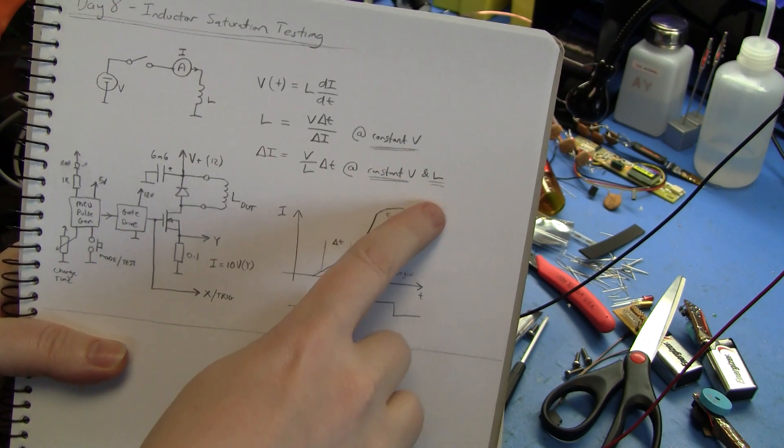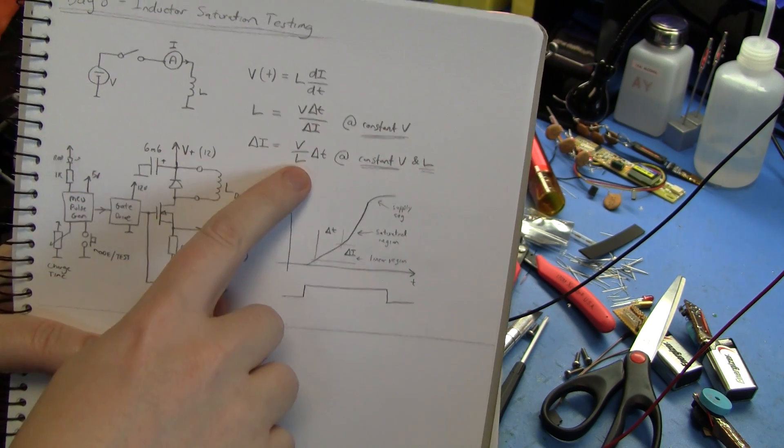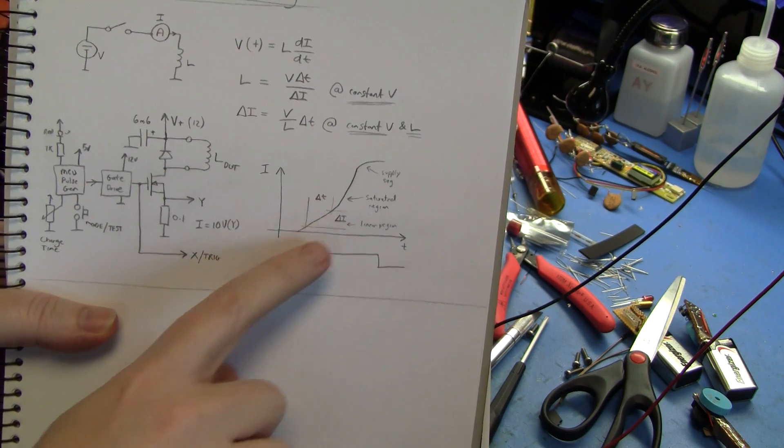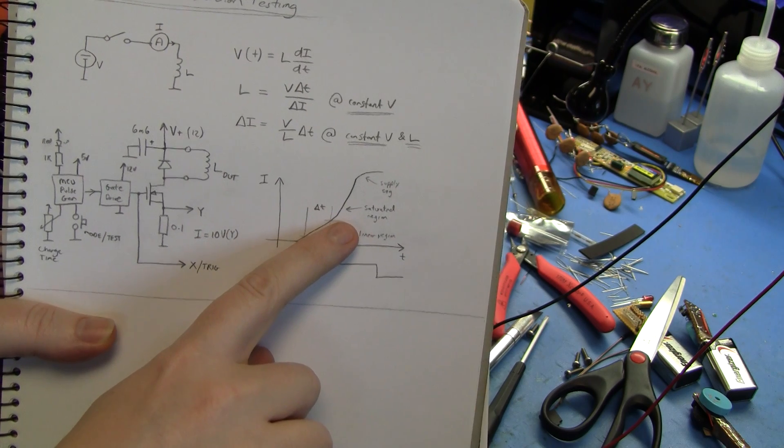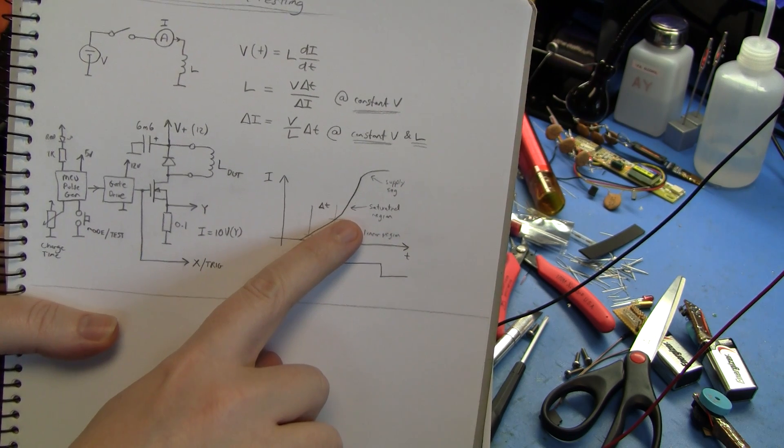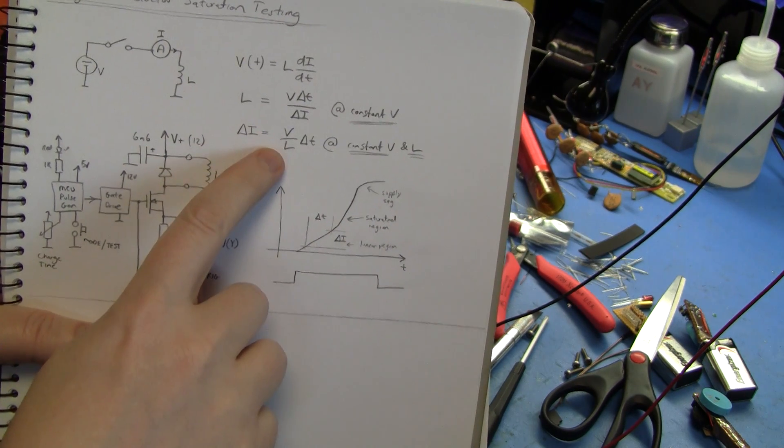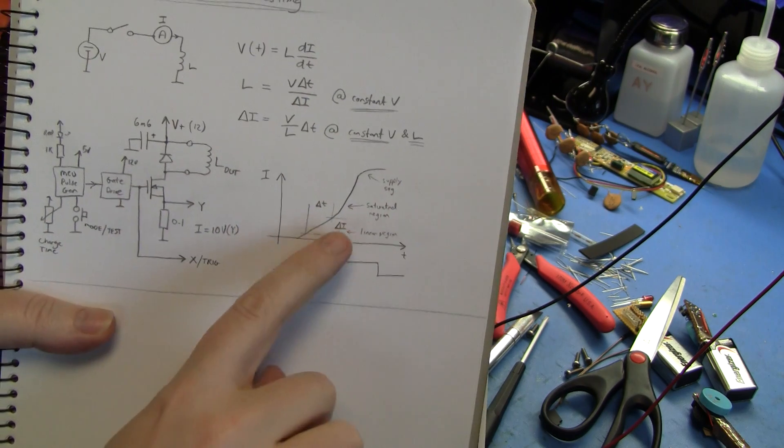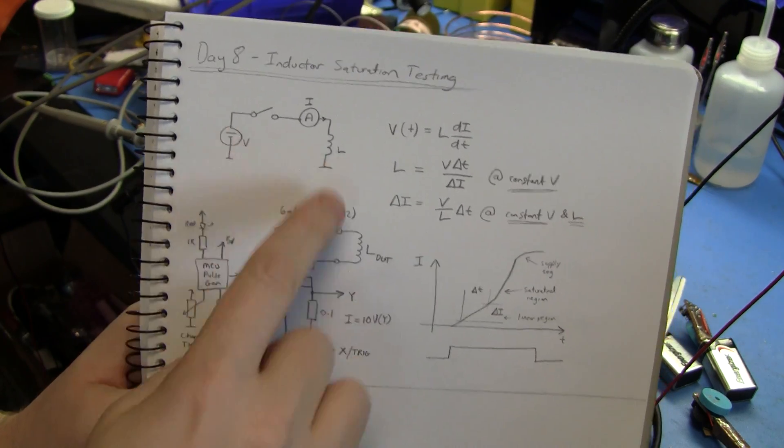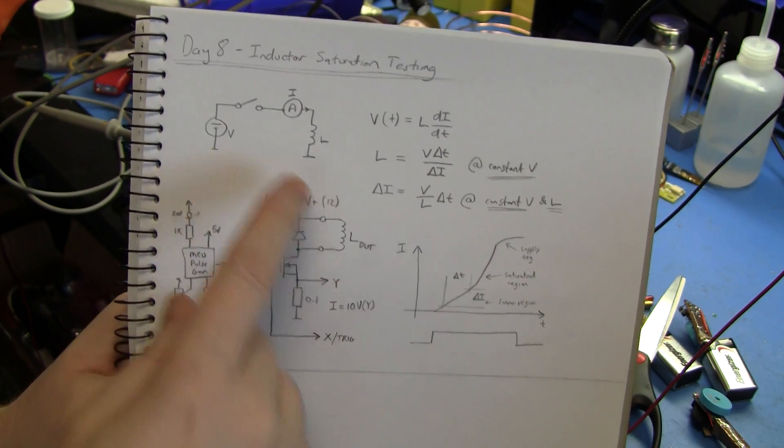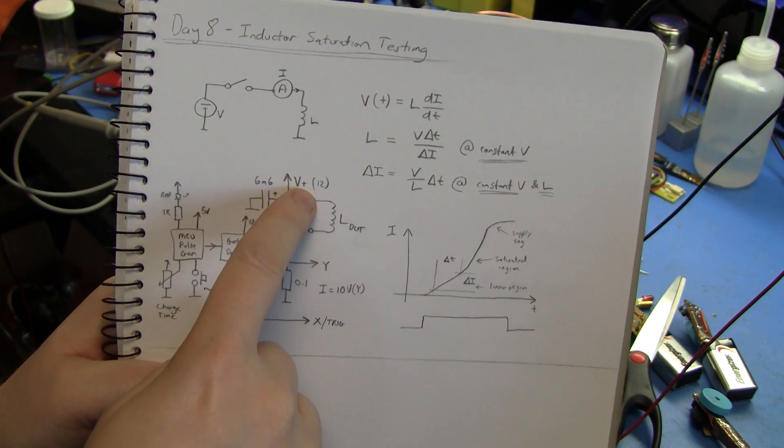But only at constant voltage and constant inductance. If the inductance changes because say the core material saturates then the slope of this line will change. So that's just what we're showing here. The inductor charges up until the core material can no longer provide any more magnetization, so the inductance drops and the slope of the line increases.